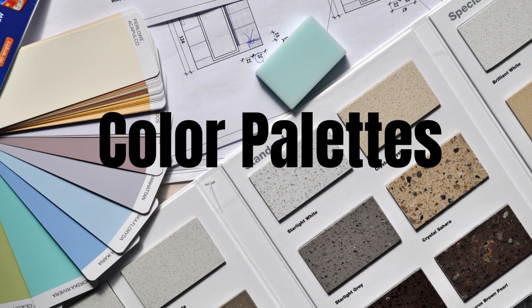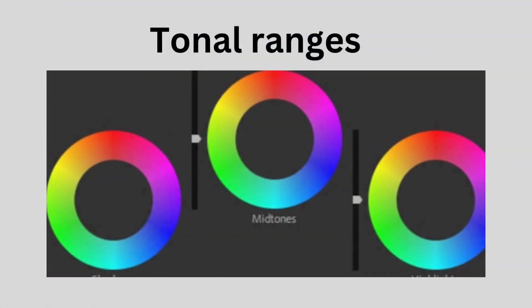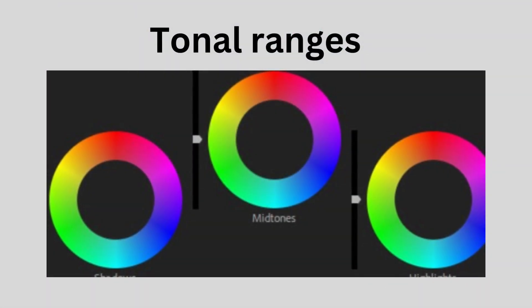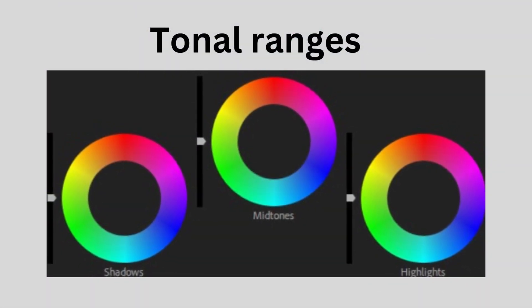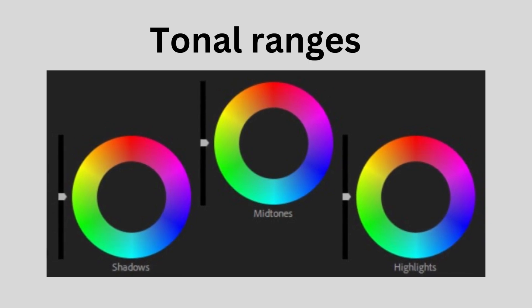One of the fundamental aspects of color grading is the use of color palettes, which refers to a carefully selected range of colors used consistently throughout a film to establish a certain mood or theme.